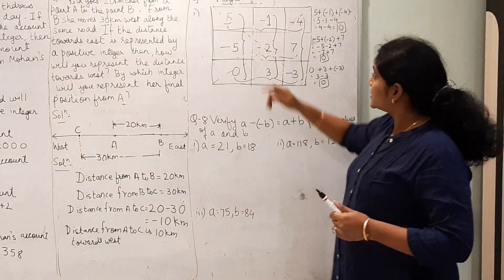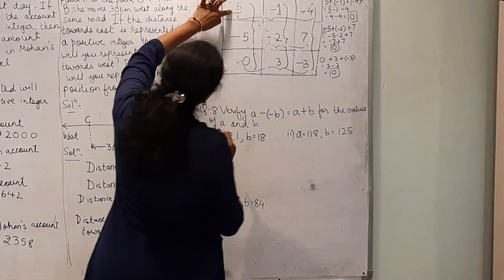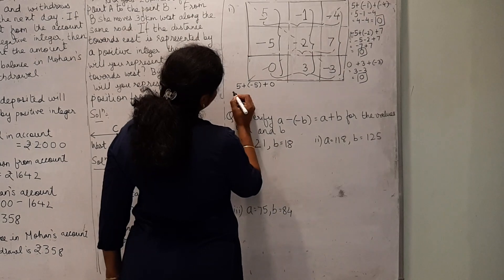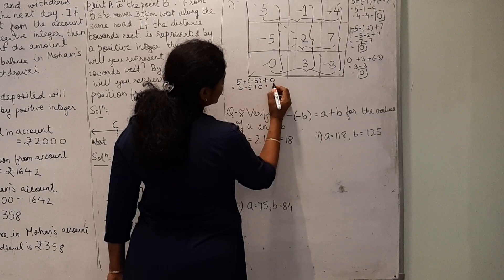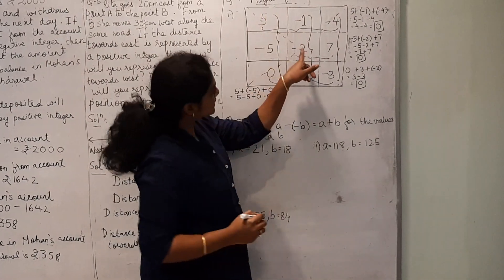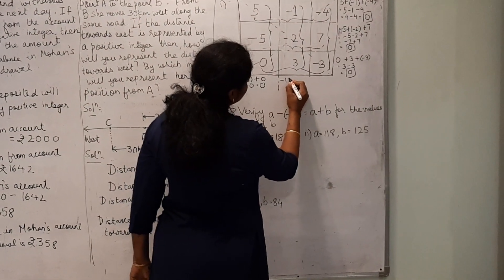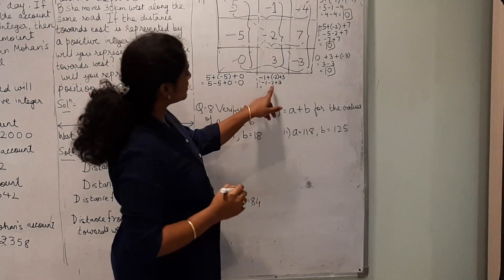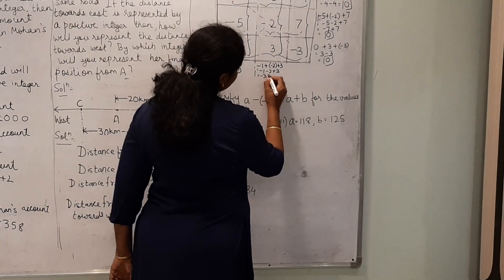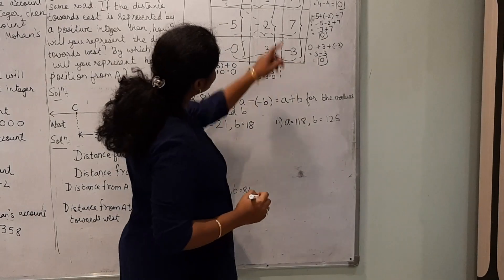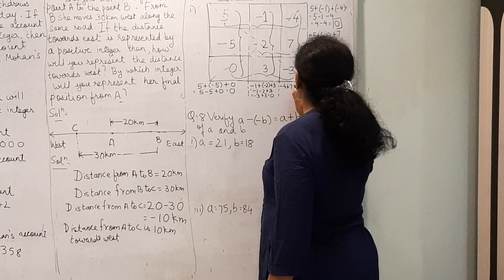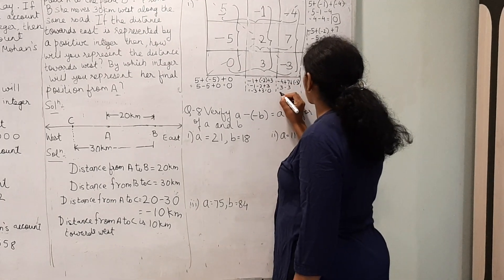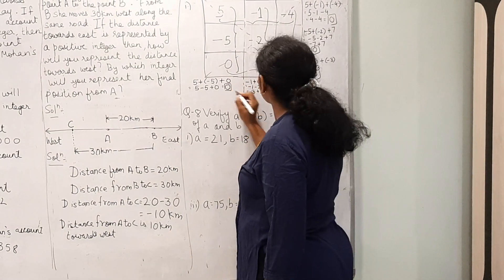Now going vertically — column sums. First column: 5 plus (-5) plus 0 equals 5 minus 5 plus 0, which is 0. Second column: (-1) plus (-2) plus 3: minus 1 minus 2 is minus 3, plus 3 equals 0. Third column: (-4) plus 7 plus (-3): minus 4 plus 7 is 3, minus 3 equals 0. All column sums also equal 0.